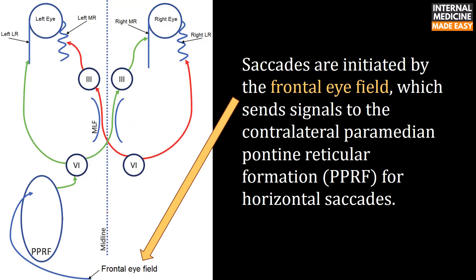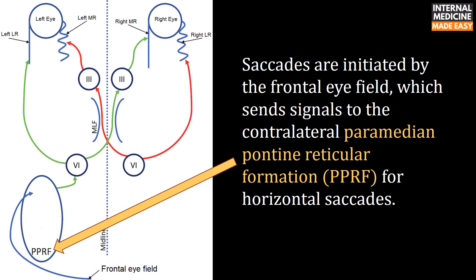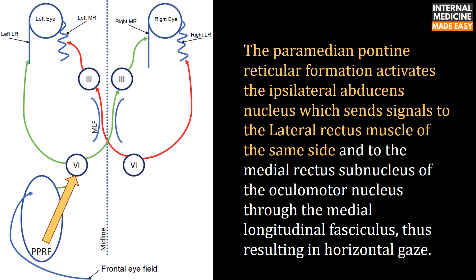Saccades are initiated by the frontal eye field, which sends signals to the contralateral paramedian pontine reticular formation for horizontal saccades. The paramedian pontine reticular formation activates the ipsilateral abducens nucleus, which sends signals to the lateral rectus muscle of the same side and to the medial rectus subnucleus of the oculomotor nucleus through the medial longitudinal fasciculus, thus resulting in horizontal gaze.